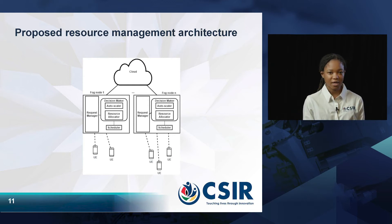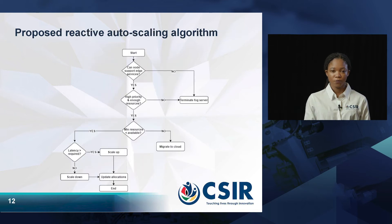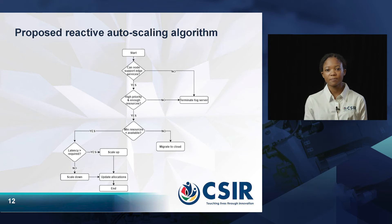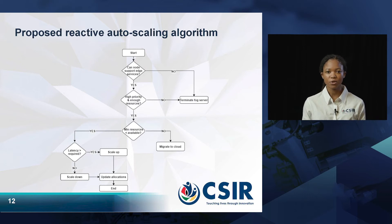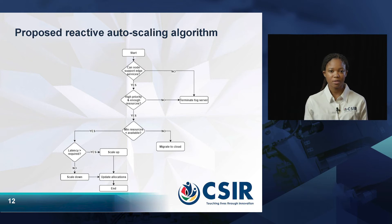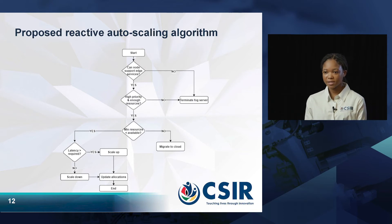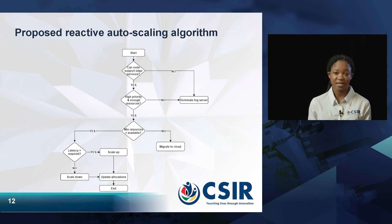The scheduler uses an earliest deadline first strategy to allocate requests to be executed. The proposed resource allocation algorithm begins with the request manager checking whether the node can support edge services. If so, a request is sent to the user for the application details, which include the size of the sensor data to be processed, the priority level, the minimum processing density, and the maximum tolerable latency of the application.